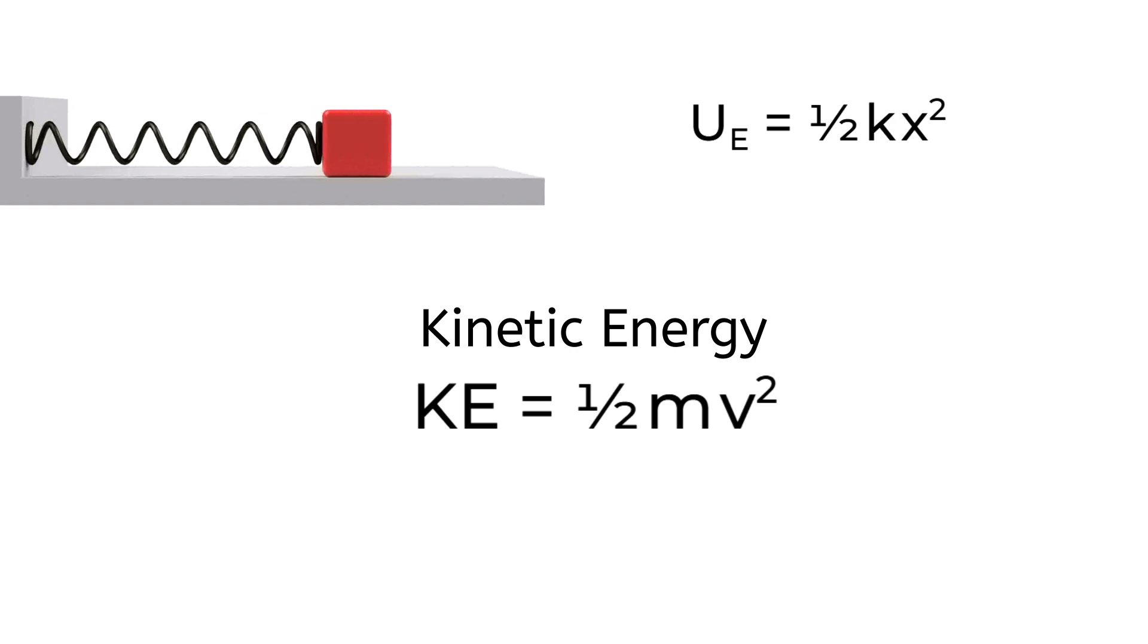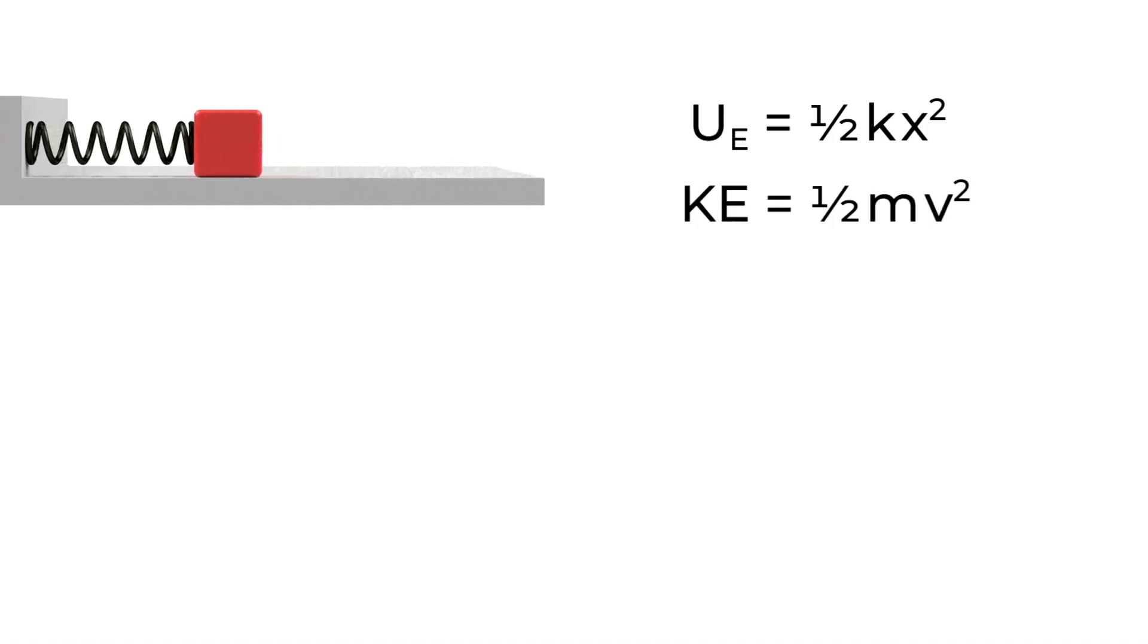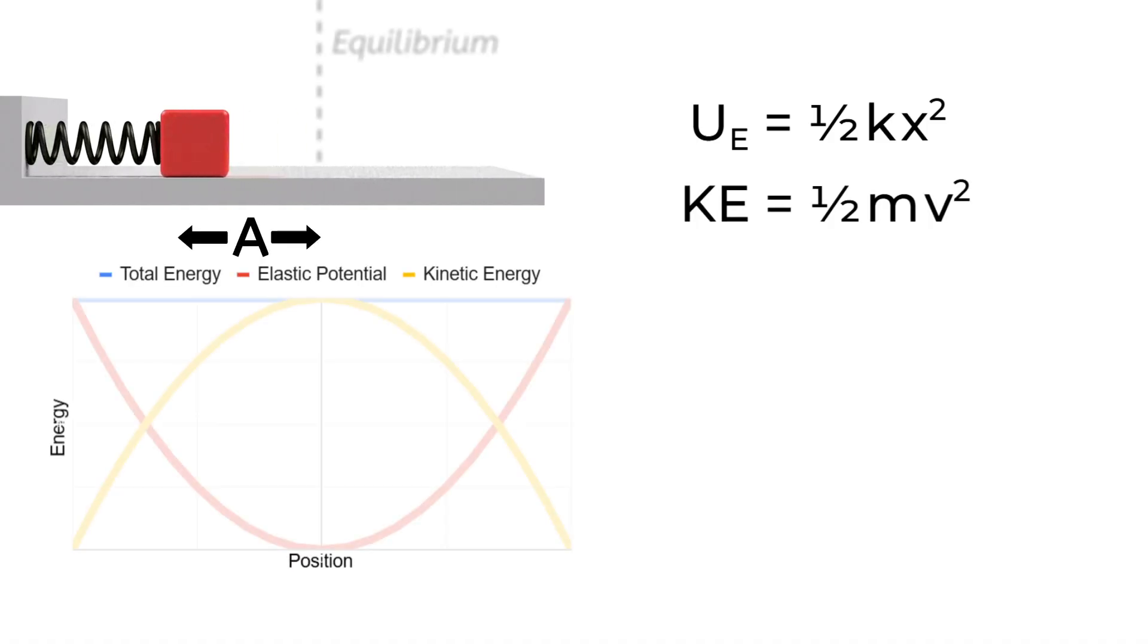m is the mass of the block, and v is how fast it's moving, or its velocity. When the block starts at its maximum amplitude, all the energy is stored in the spring. Or we could say the system starts with some energy 1/2 ka². Remember, a is the amplitude, or the greatest distance the block ever reaches from equilibrium.